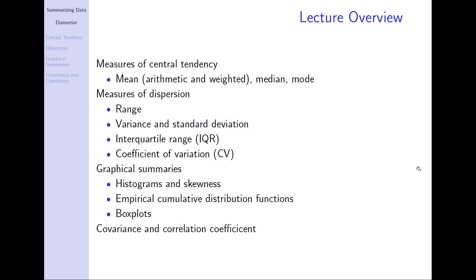Note that measures of central tendency and measures of dispersion are numerical summaries, in the sense that they give you a number summarizing your data. Very often it is also important to look at graphical summaries. There we are going to look at histograms, the empirical cumulative distribution function, and box plots. The final topic of this lecture is covariance and the correlation coefficient.